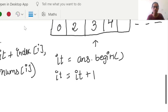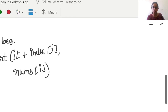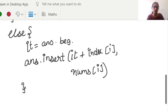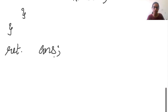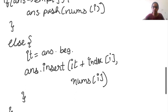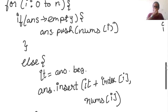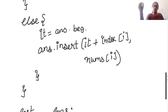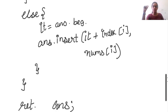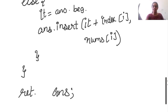After closing the else part and the for loop, we return the answer vector. So the full logic is: run the for loop, check if answer is empty — if so push the first element — otherwise update the iterator to the beginning and execute the insert operation. After n iterations, return the answer.